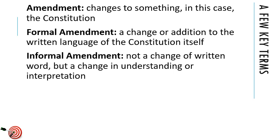A few key terms. First, what is an amendment? It changes something — in this case, the constitution, but you can amend anything. A formal amendment is a change or addition to the written language of the constitution — it actually changes the wording. An informal amendment is not a change to the written word, but a change in our understanding or interpretation of the constitution. Formal is an actual substantive written change; informal is simply a change in understanding. A convention is simply a meeting called for a specific purpose; different states handle this a bit differently.